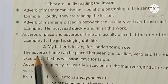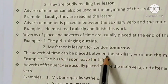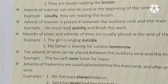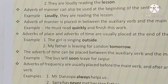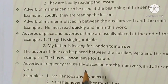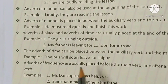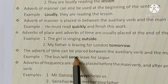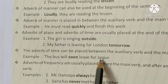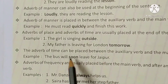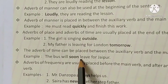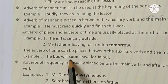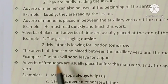Next: the adverb of time can also be placed between the auxiliary verb and the main verb. Adverb of time को हम auxiliary verb और main verb के बीच में भी use करते हैं। Example: 'The bus will soon leave for Jaipur.' Here 'will' is the auxiliary verb, 'leave' is the main verb, and 'soon' is the adverb of time.